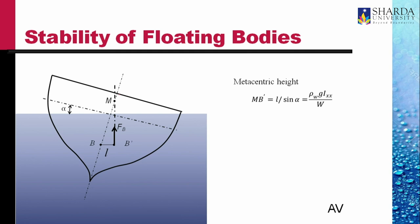The ship is stable if the centre of gravity lies within segment BM — that is, below the metacentre M. The lower the centre of gravity, the more stable the ship. If the centre of gravity lies above M, the ship is unstable. By loading the ship appropriately, the captain and crew ensure the CG is well below the metacentre. The metacentric height BM is a property of the ship geometry and weight, and plays a very important role in navigation.